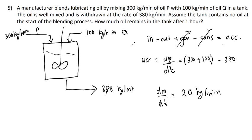So for each minute there is 20 kg of oil accumulating in the tank. After 1 hour (60 minutes), the mass of oil remaining in the tank equals 1200 kg. We don't know whether the tank will overflow because we don't know the capacity of the tank, but after 1 hour the answer is 1200 kg of oil in the tank. Please attempt all these tutorial questions on your own without looking at the solution, and ask any questions in the WhatsApp group or email me. All the best, thank you.